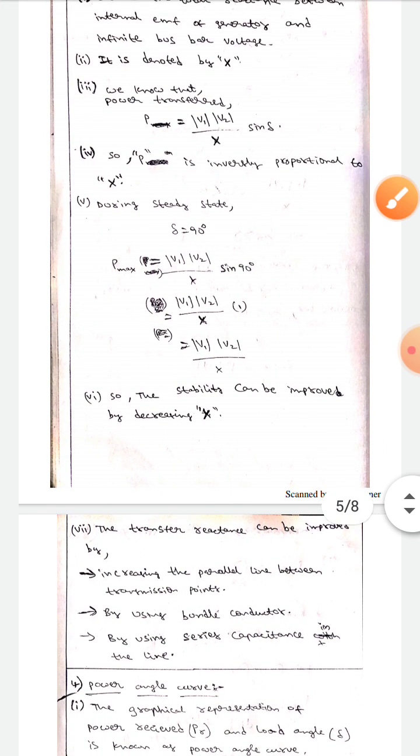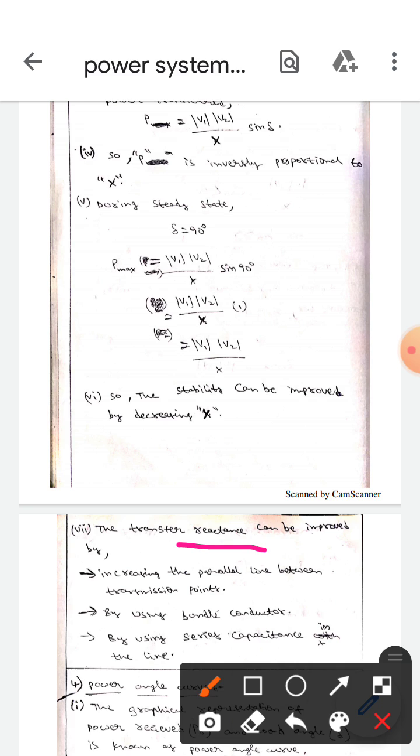The transfer reactance can be decreased. We should decrease this transfer reactance by increasing the parallel line between transmission points, by using bundle conductors, and by using series capacitance in the line. By using these three processes, we can decrease the transfer reactance.